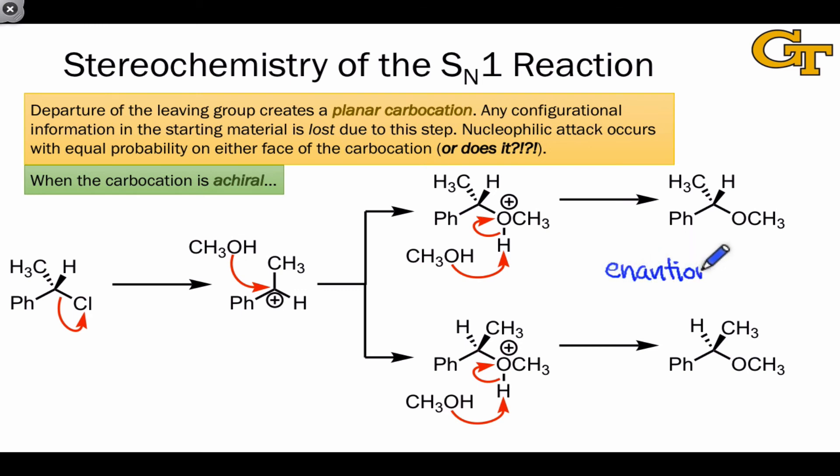They both contain a single stereocenter with differing configurations. And because the step that gave rise to the enantiomers didn't involve anything chiral, we're going to end up with a 50-50 mixture of the two, what's known as a racemic mixture.